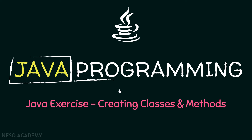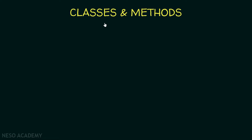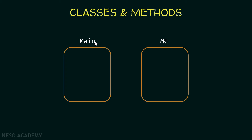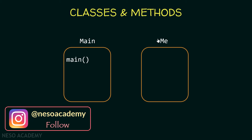Hello friends and welcome back. In this lecture, we're going to solve an exercise. Let's see what classes and methods we have. Basically, we have two classes: a Main class and a Me class. Inside the Main class, we have the main method, and in the Me class, we have two methods: a sayName method and a sayAge method.